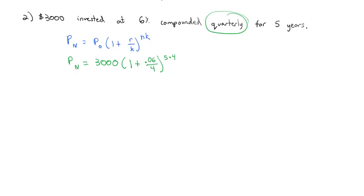N is the number of years, which is five times K, which again quarterly means four times per year. We can just type this in our calculator exactly like it is. The only thing we have to be careful of is that exponent needs to go in parentheses so that the calculator knows the entire thing is in the exponent, not just the five. And when we do, we find out that this $3,000 investment after five years has grown to $4,040 and 57 cents.